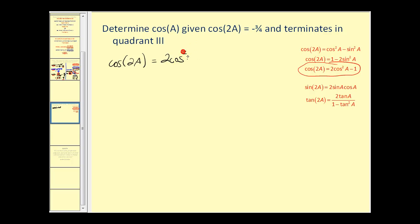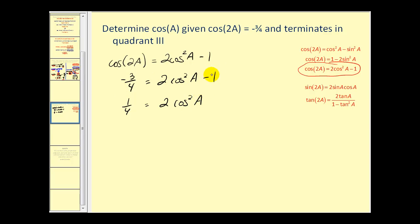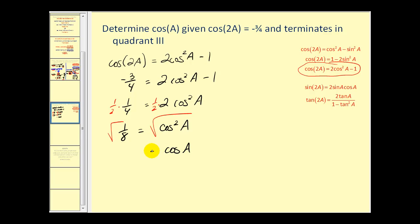With cosine of two A equal to negative three-fourths, we use the identity cosine two A equals two cosine squared A minus one and solve for cosine A. Adding one to both sides: negative three-fourths plus one gives one-fourth, so one-fourth equals two cosine squared A. Dividing by two gives one-eighth equals cosine squared A. Taking the square root of both sides, cosine A equals plus or minus one over two square root two, which simplifies to plus or minus one over two square root two.